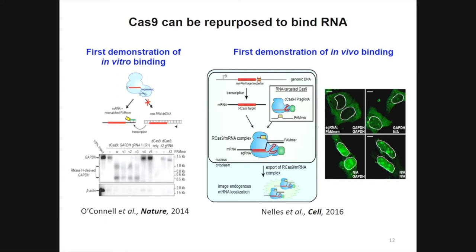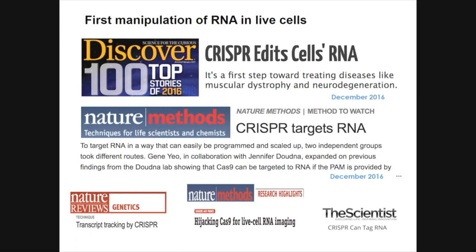We were actually rather embarrassed because right after this, a lot of people said you can do many things like treating muscular dystrophy, neurodegeneration, and so on - when in fact we hadn't really thought about this yet. But we figured since they mentioned it, why don't we work on it. So we had a postdoc join the lab who was interested in myotonic dystrophy. This is a terrible disease - you have atrophy of muscle, there's also a CNS disorder where you have memory loss, sleep abnormalities, and cardiac conduction issues in congenital cases. DM was our prototype model to think about targeting RNA-related diseases.